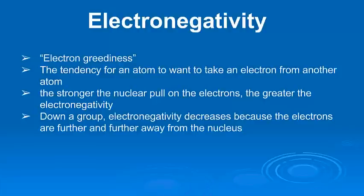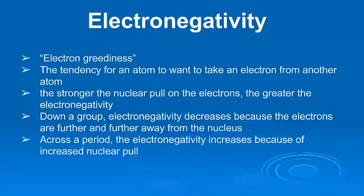So, if you go down a group, we already know the atoms get bigger. The valence electrons get further away. And that means that the electrons aren't really going to be attracted to the nucleus. The atom's not really going to want to take on more electrons. So, the electronegativity goes down. But as you go across, remember, the electrons don't move further away. As a matter of fact, they get pulled in a little bit closer.